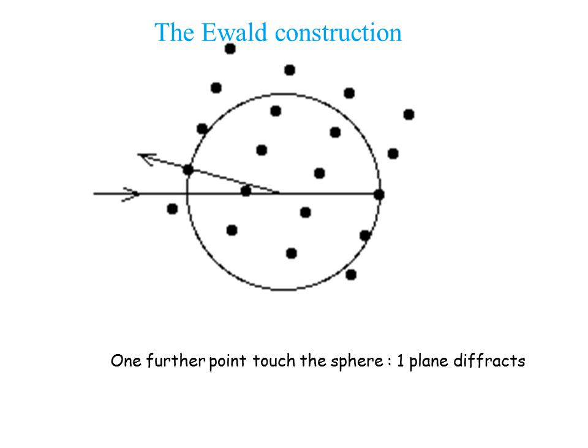Rotating a little more, there is only one point for which the Laue condition is matched, giving us an almost backscattered diffracted beam.